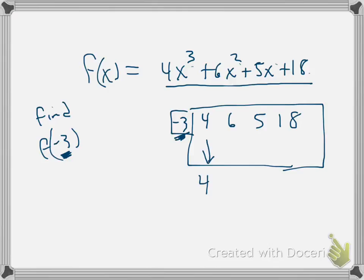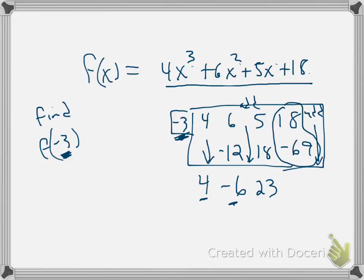Bring down the 4. Negative 3 times 4 is negative 12. Record that here. Remember when you go down, you add. So 6 plus negative 12 is negative 6. Negative 3 times negative 6 is 18. 5 plus 18 is 23. And negative 3 times 23 is negative 69. And then this last way we add, we get the remainder. 18 minus 69 is negative 51.